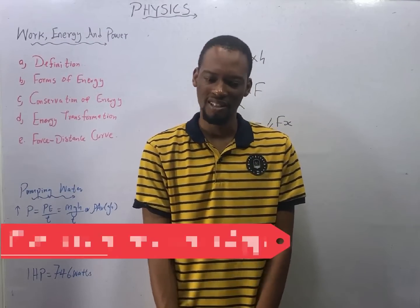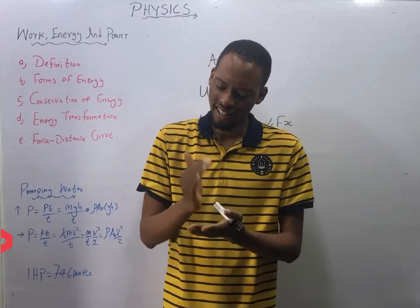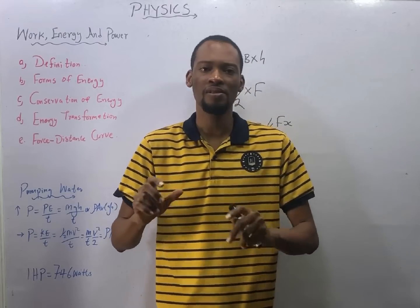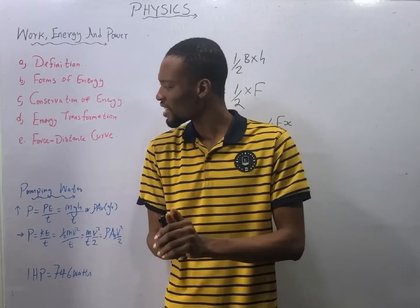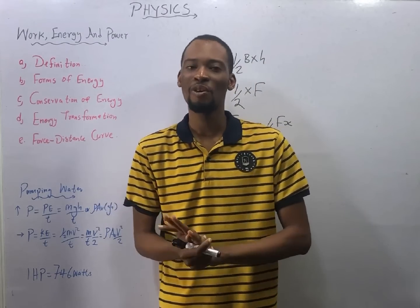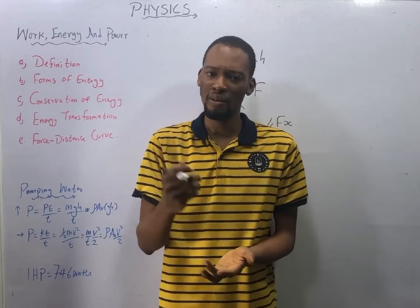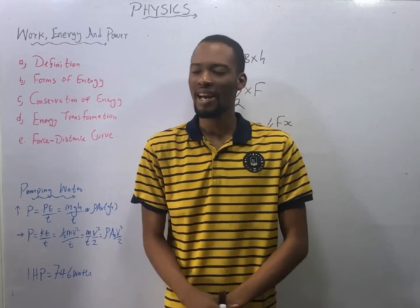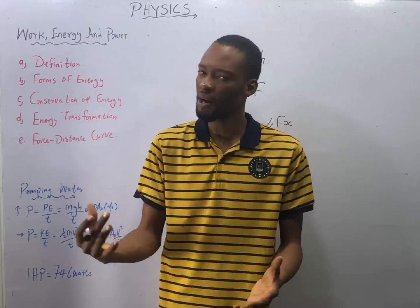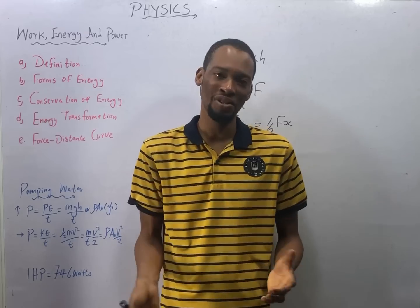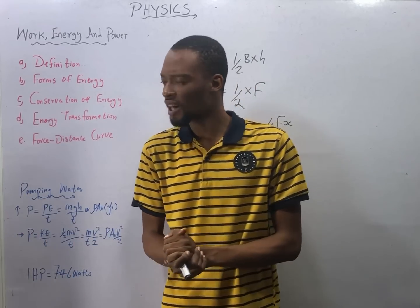Get the Flash Learners JAMB app — use the description in this video, visit flashlearners.com, or search 'Flash Learners JAMB' on Google Play Store. Look for the Flash Learners logo. With this app you'll be able to practice as many questions as possible. If you have problems or need to ask questions, contact me directly using my handles.